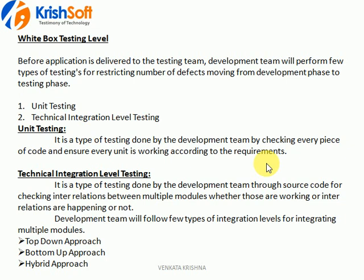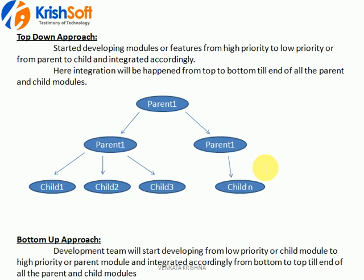In the top-down approach, first they develop the main parent module, then the low-level sub-parent modules are integrated, and lastly the child modules are developed and integrated with the sub-parents, which are integrated with the parent. So everything goes from top to down: parent modules first, then sub-parent modules, and then child modules.